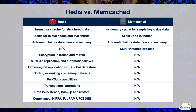ElastiCache for Redis is the in-memory cache designed to store complex structured data. ElastiCache for Memcached is designed for simple key-value store. You should choose Redis if you need to store complex data types in memory. If you only need to store simple data types, you can consider Memcached.